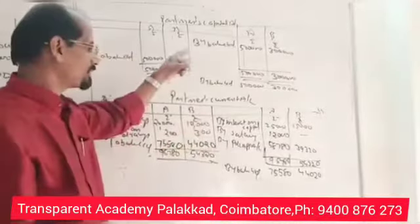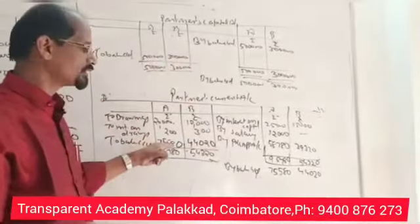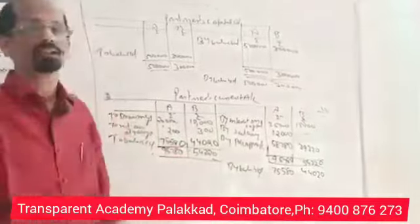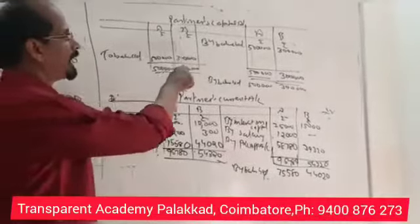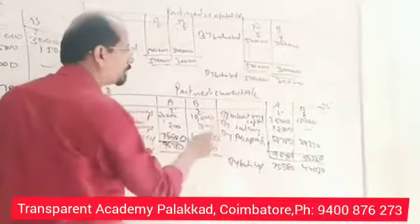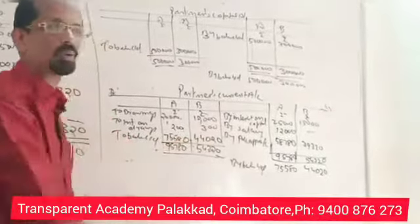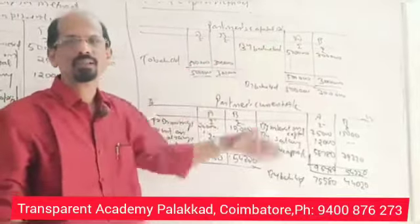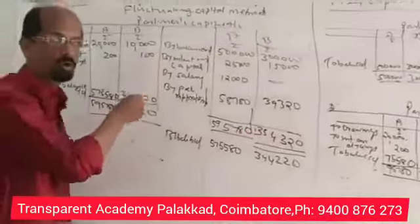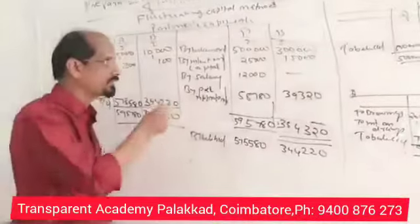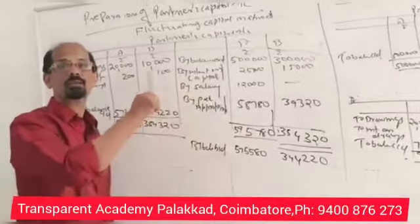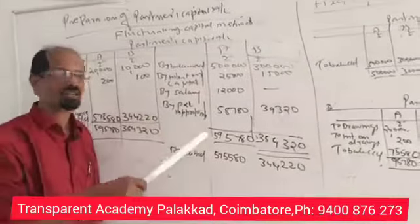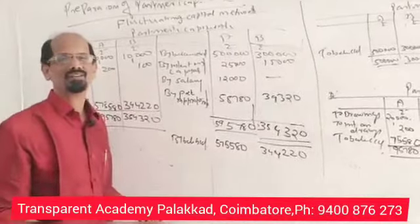So the capital remains fixed. All the other adjustments — interest on capital, salary, drawings, profit share — are done in the current account. That is the fluctuating capital method versus the fixed capital method: in fixed capital, you split the entries into two accounts — the capital account and the current account. When working in the fluctuating capital method, all adjustments are done in the single capital account.